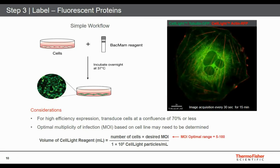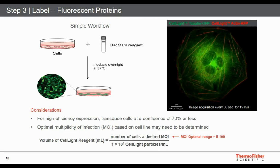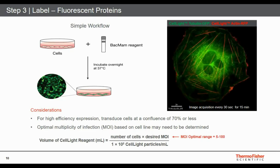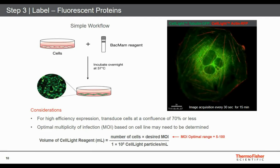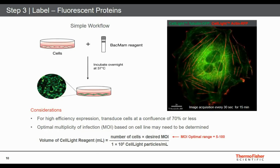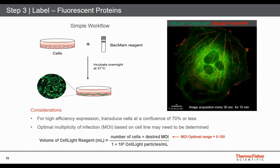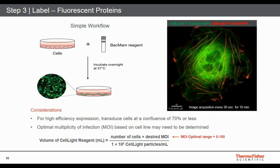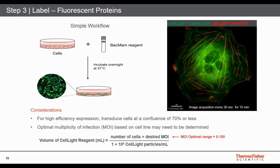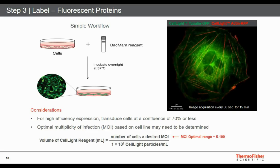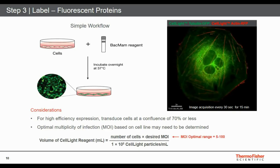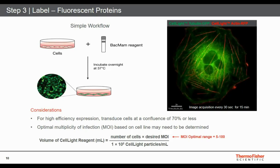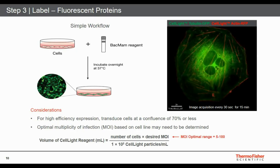The highest transduction efficiency occurs while cells are still in log-phase growth, so you want to transduce before they're fully confluent — generally at about 70% confluency or less. Different cell types respond to the virus at different levels and may require a different multiplicity of infection (MOI). You need to determine the MOI for your specific cell type by establishing a titration of viral particles on your cell, generally ranging from about 5 to 100 viral particles per cell. A simple equation can determine the volume of reagent needed for your labeling.